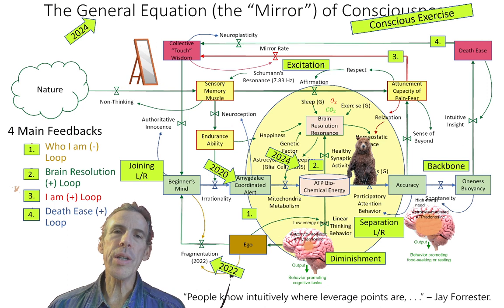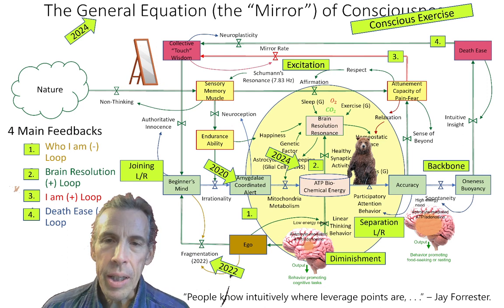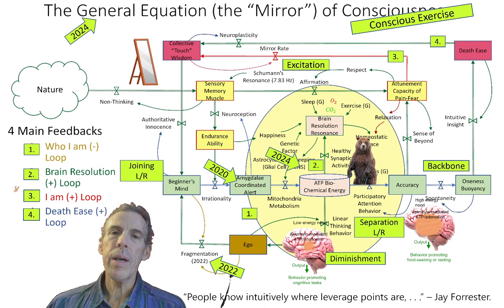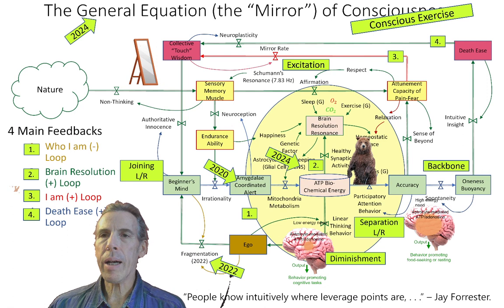It contains the first loop, which is the who I am loop, or the egoic structure construction that we come up with for ourselves, which really does hold us back a lot, like Gollum in the Lord of the Rings.